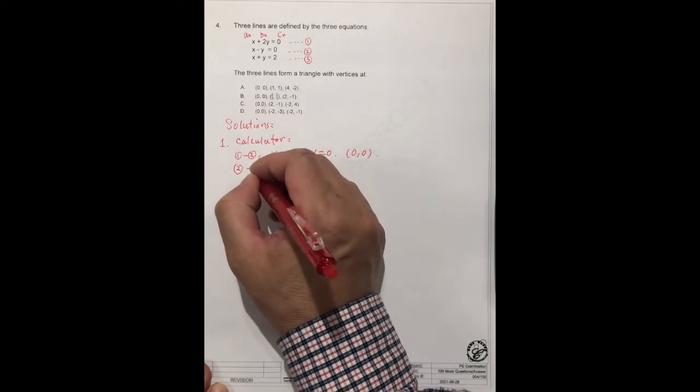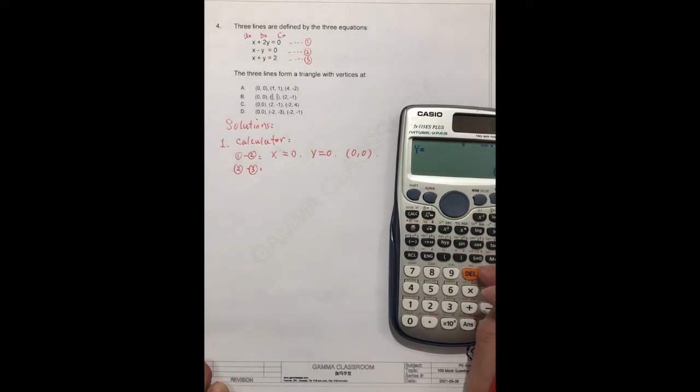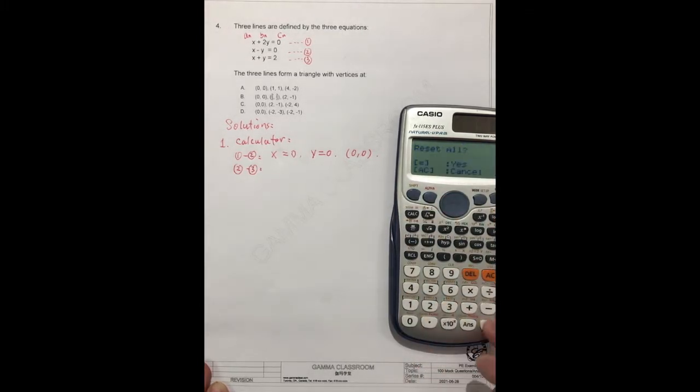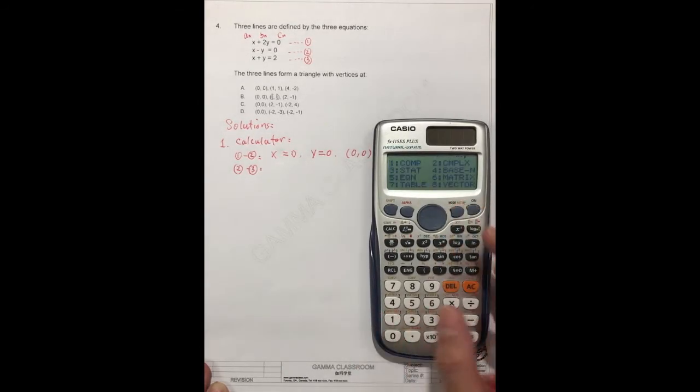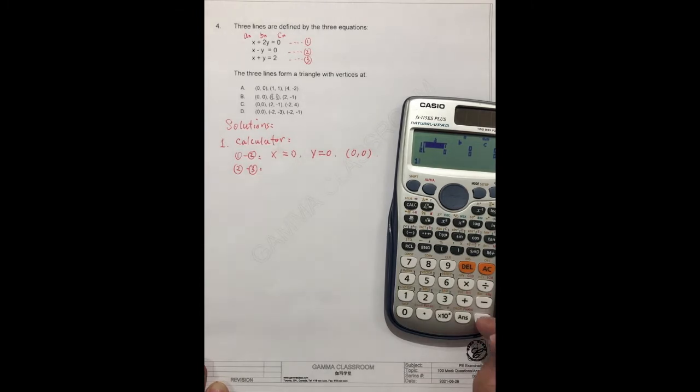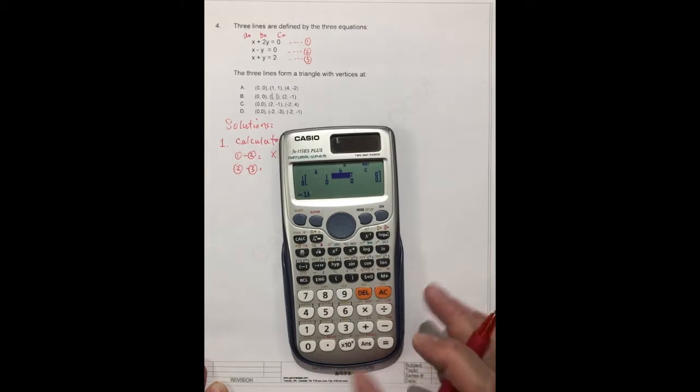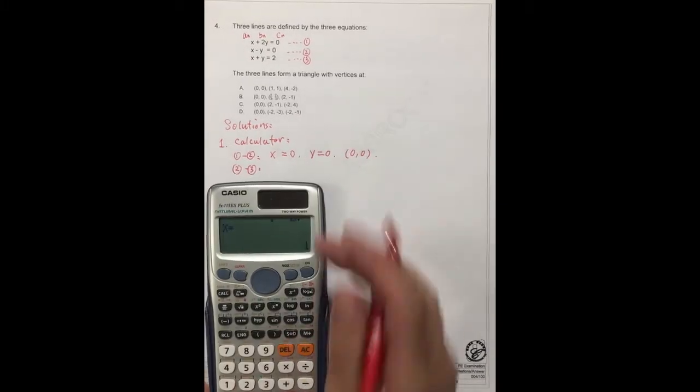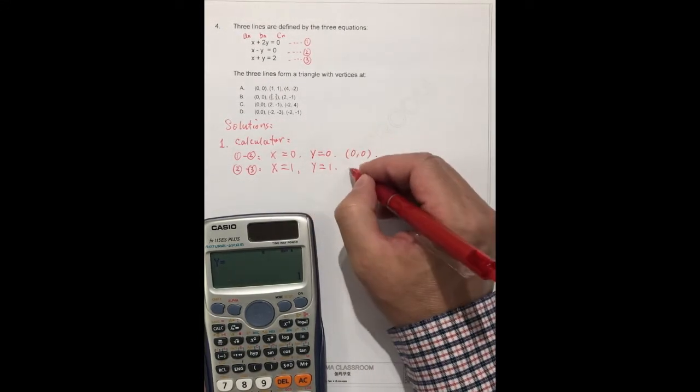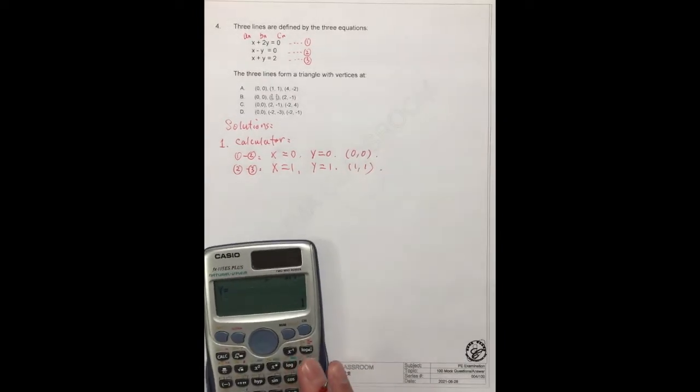We can do the same with equation number two and three. Clear. I have to clear this. Equation number two and three. The first one is minus 1, equal, 0. And the second one is 1. So the x is 1, x equals 1, y equals 1. The intersection is 1, 1.